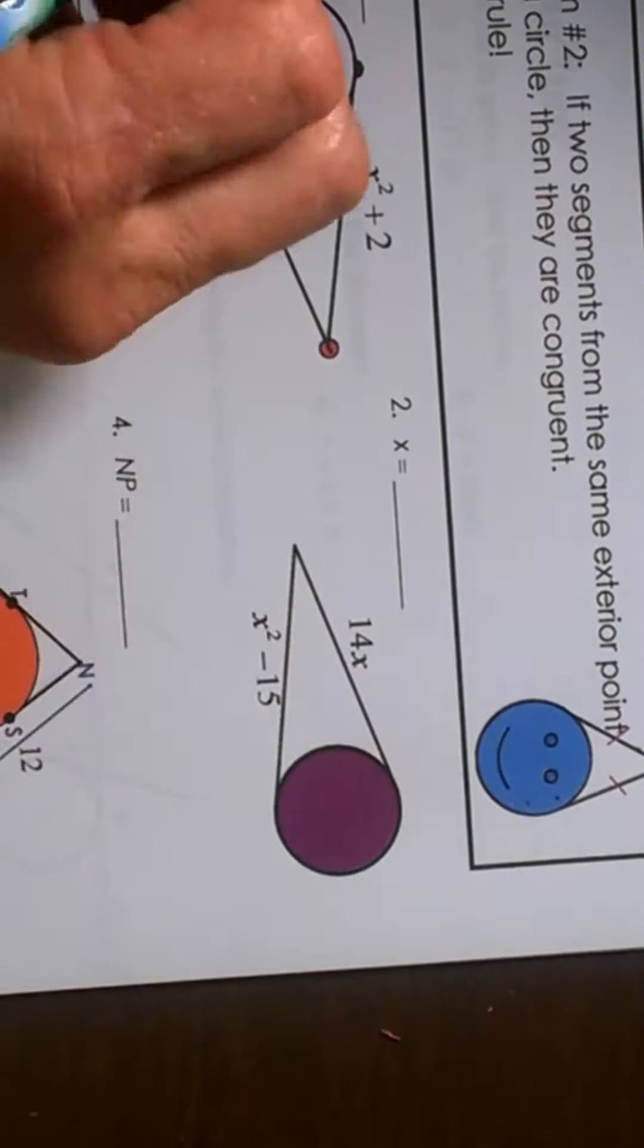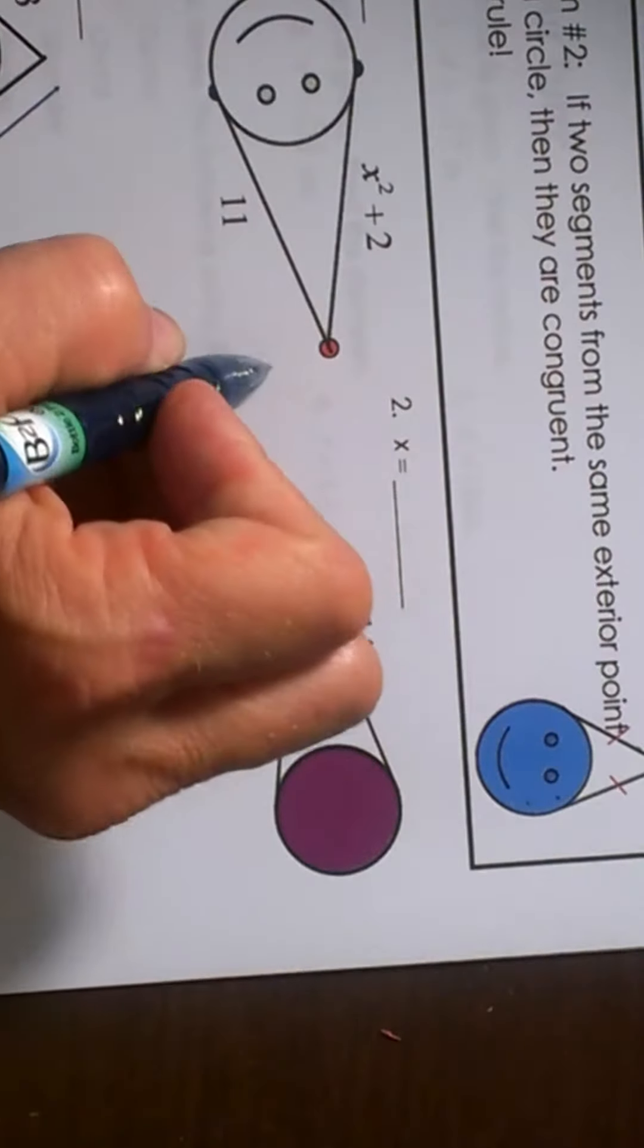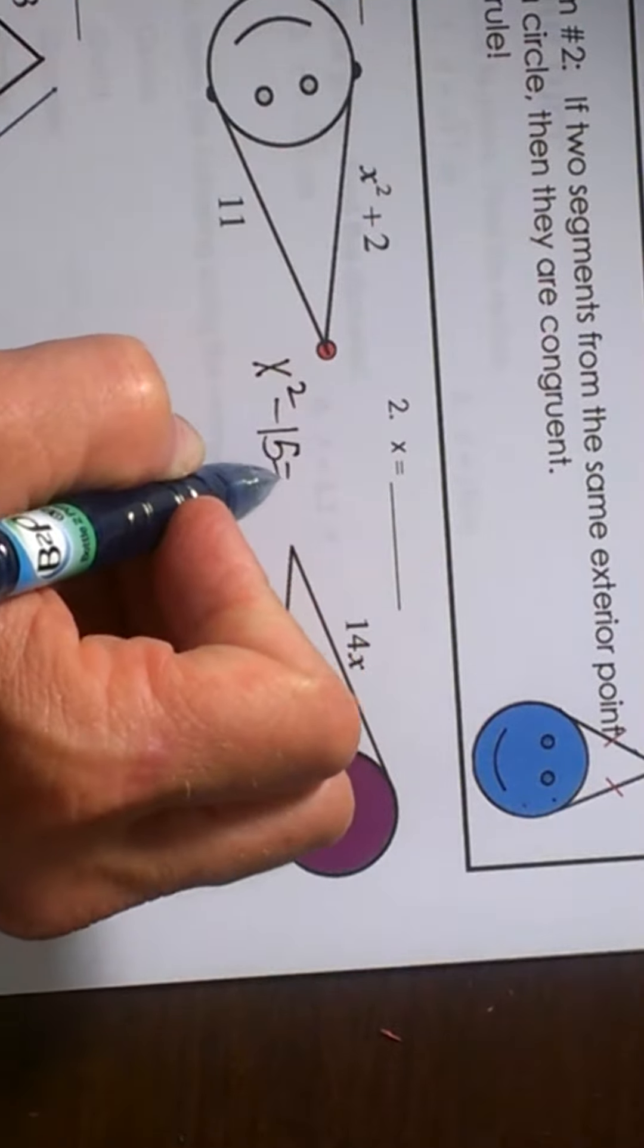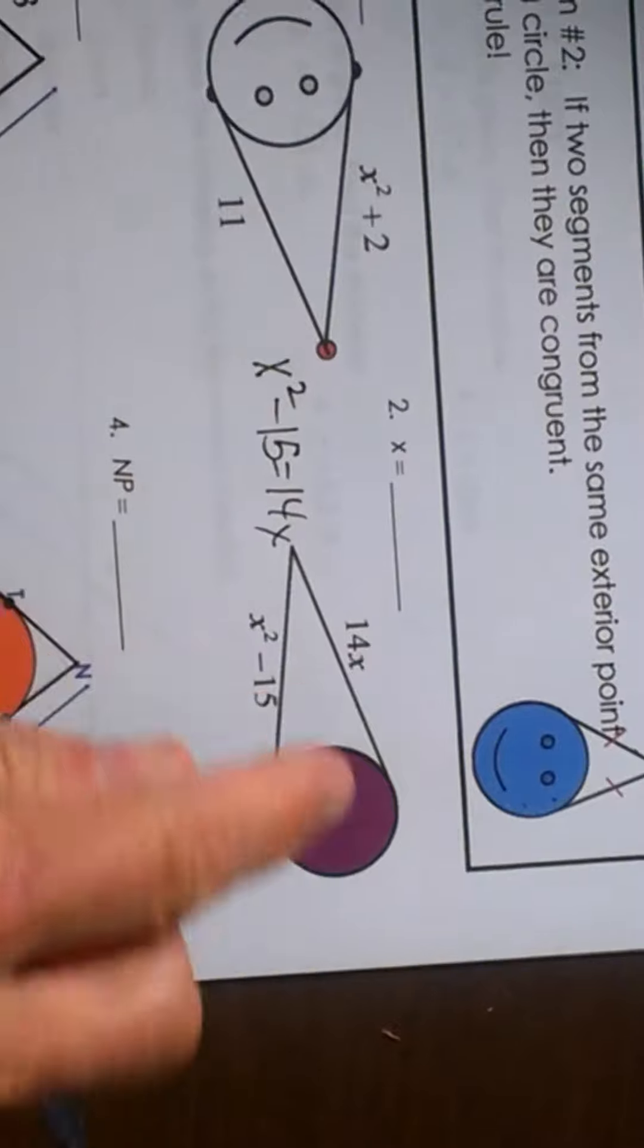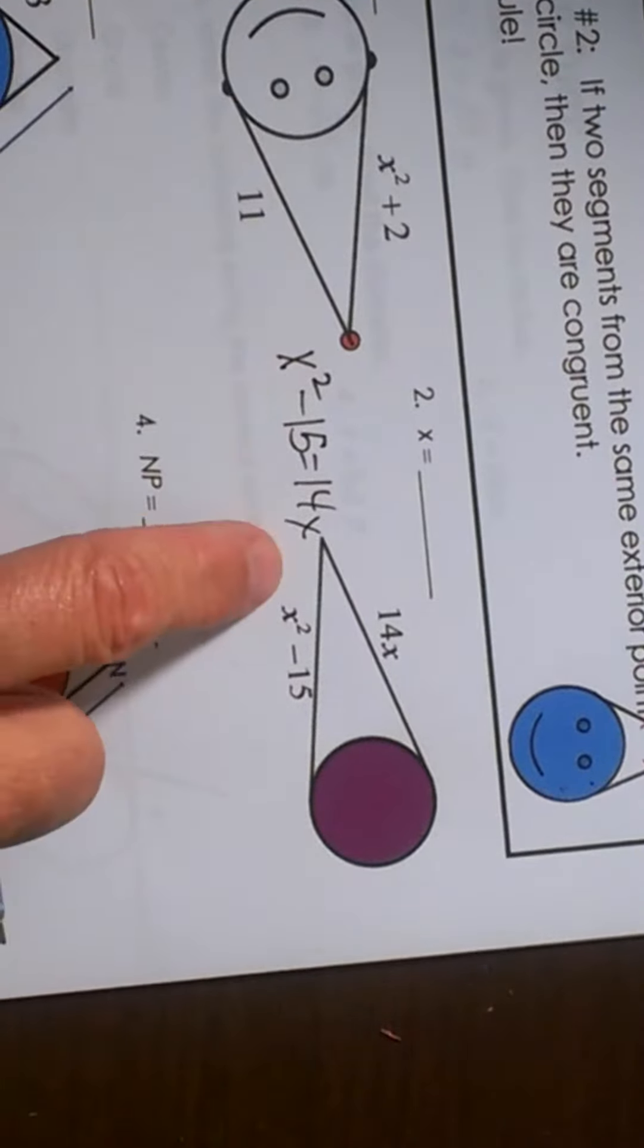Okay, so number 2. We've got these two segments. We're again going to set them equal to each other. So we have x squared minus 15 equals 14x. Now we don't know the length of either segment because they both have a variable, so you just set them equal to each other.